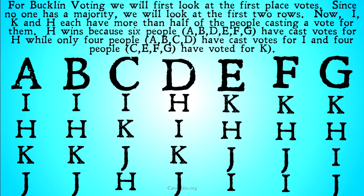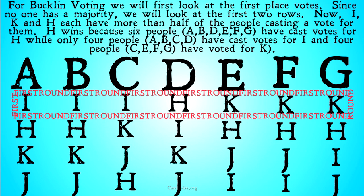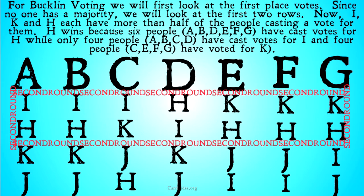For Buckland voting, we first look at the first place votes, just like we did for instant runoff voting. Since no one has a majority, we expand that to looking at the first two rows. Now each of I, K, and H have more than half of the people casting a vote for them. H is going to win because six people — A, B, D, E, F, and G — have cast their votes for H, while only four people — A, B, C, and D — cast their votes for I, and four people — C, E, F, and G — cast their votes for K.